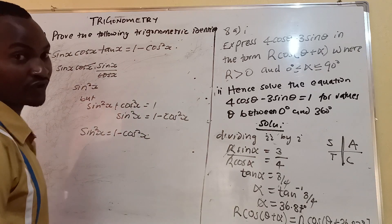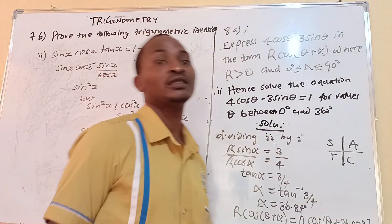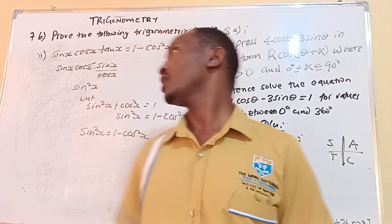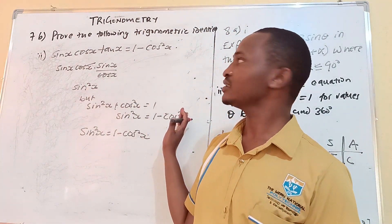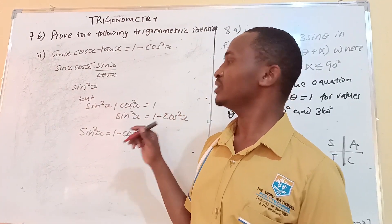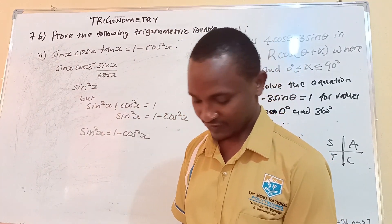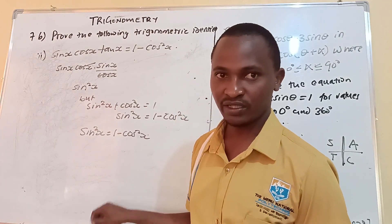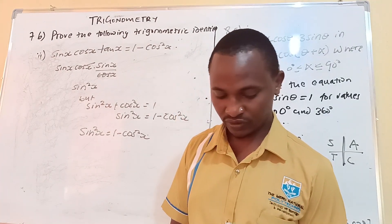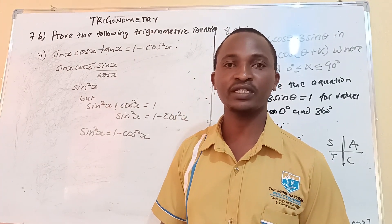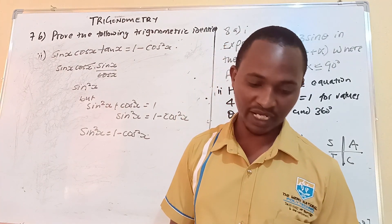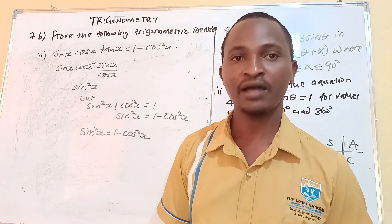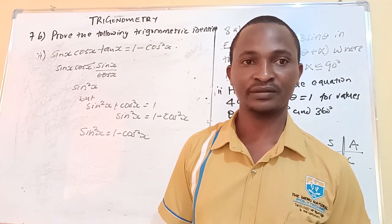As you can see, the two sides have balanced. For proving identities, it is always about making sure the two sides have balanced. Let us meet in the next video where we will be continuing with trigonometry, either from mechanical or electrical engineering past papers.